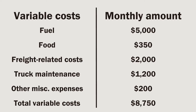For this demonstration, we're giving examples of what your variable costs could be. We'll say you spent $5,000 on fuel, $350 on food, $2,000 on freight costs, $1,200 on semi truck maintenance, and $200 on miscellaneous expenses. Using those examples, our total variable costs for last month came to $8,750. However, you need to go back and actually determine what your variable costs were last month.